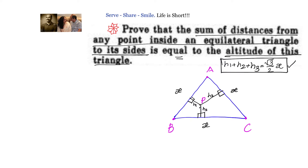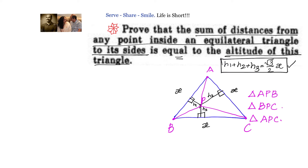We know that the area of an equilateral triangle can be found using the formula root 3 by 4 into x squared. Since we have the altitudes, why not divide triangle ABC into three triangles? So we have triangle APB, triangle BPC, and triangle APC — three triangles in total. Triangle ABC is divided into these three triangles, and we can easily find out the area of each.